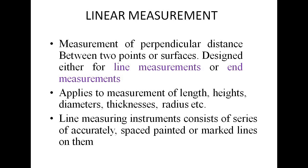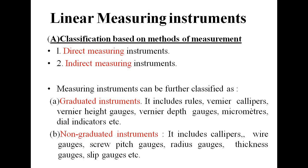Using these measurements we find out a number of unknown parameters using instruments. Linear measuring instruments are classified based on the methods of measurement. One is direct measuring instrument and the second is indirect measuring instrument. In a direct measuring instrument we get a reading directly in one step. In the indirect method, more than one conversion is required to get the exact reading. Instruments can also be classified as graduated and non-graduated instruments.